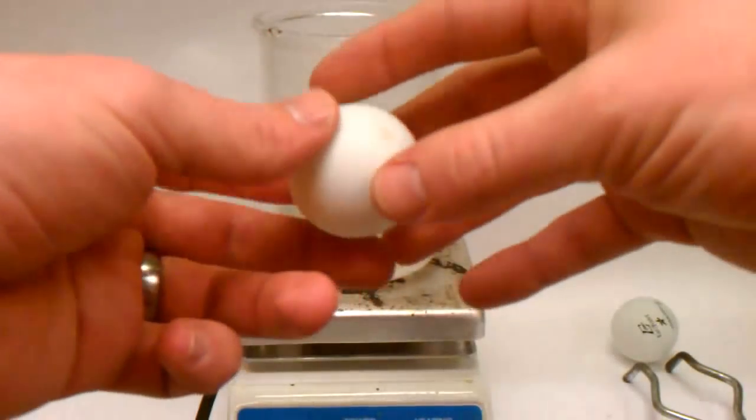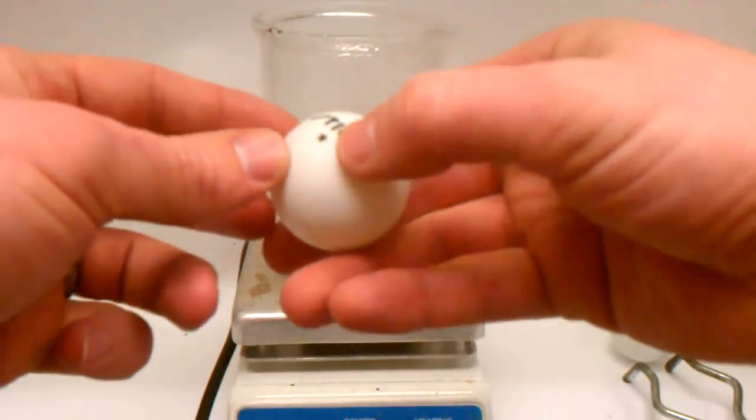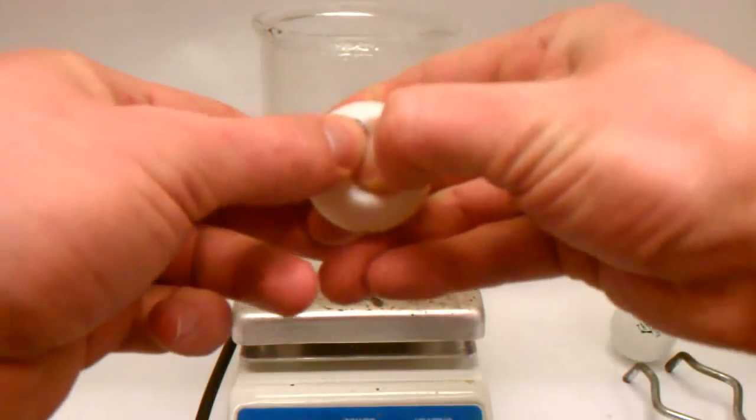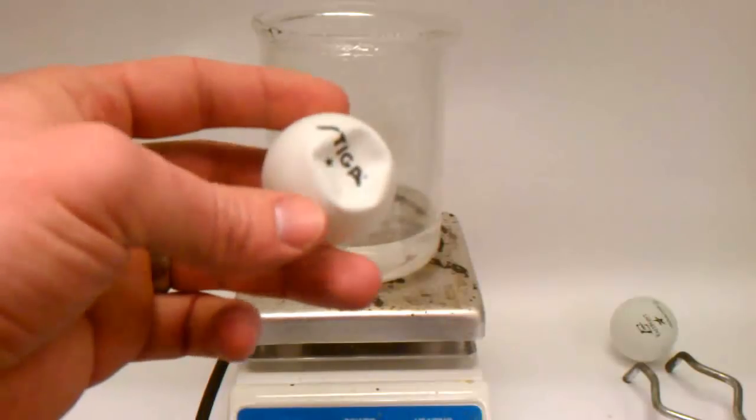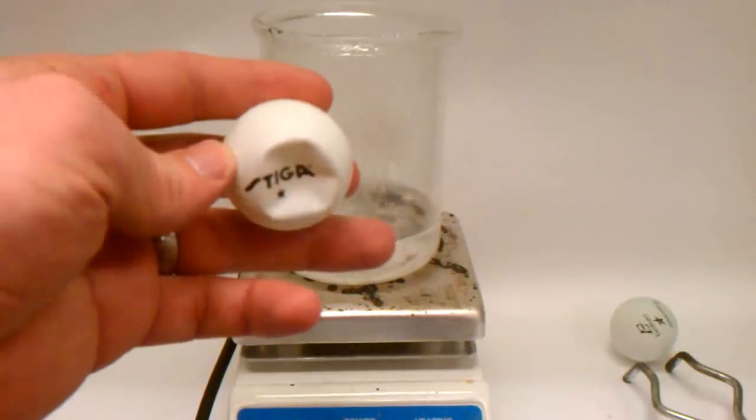You may have had this happen to you before. Playing ping pong, you have one ping pong ball left, and it gets dented. Your game, however, is not over. With a little knowledge from high school chemistry, you can fix your ping pong ball and keep playing.